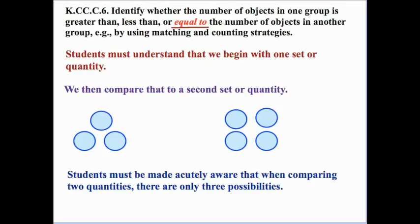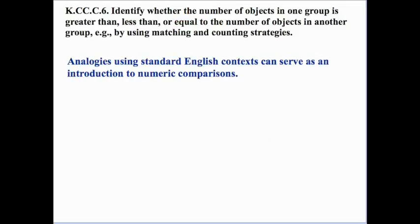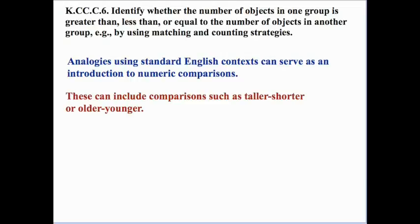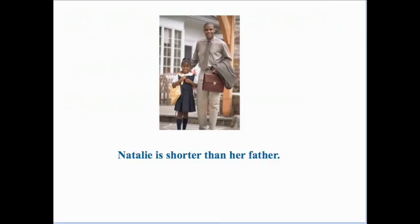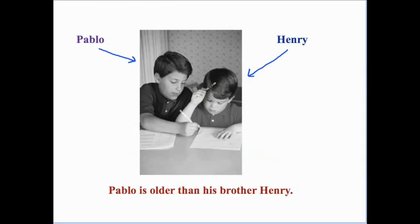Those are the only three possibilities. We can lay the foundation for these numeric comparisons by using analogies in standard English context — for example, comparisons using taller versus shorter, or older versus younger. So here, Natalie is shorter than her father. We're making a comparison without interjecting any numbers. Another analogy would be that Pablo is older than his brother Henry.